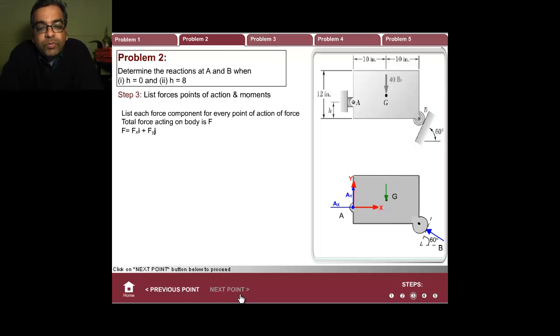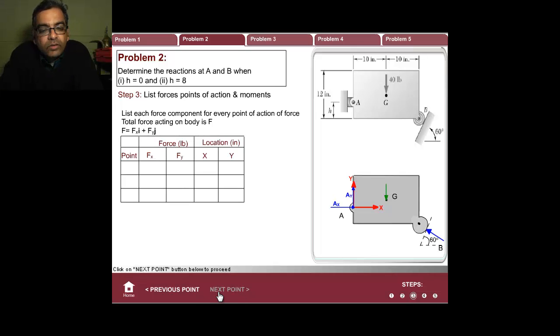Now we're going to list force, points of action, and moments. We create a table. We're going to look through each point, write the force at that point fx and fy, and the location. Point A: there are two forces, one in the x direction, one in the y direction. They're both unknown. The location we know—they're both at (0,0).